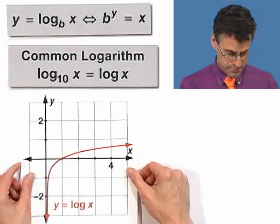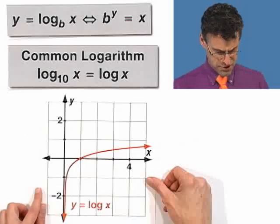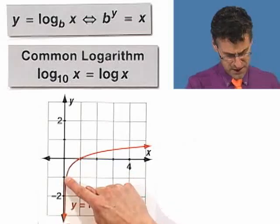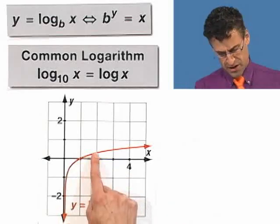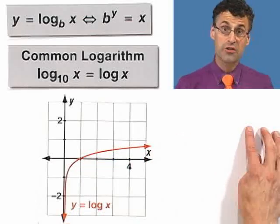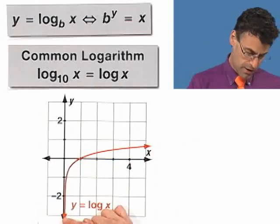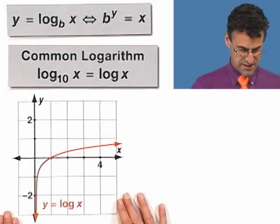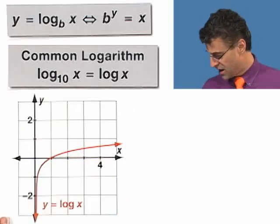And the graph of that, it's the inverse of the exponential function, which means that it has this very steep incline, then slowly gradually tapers off, and then gets bigger and bigger. This gets larger and larger without bound, but very slowly. There's a vertical asymptote on the negative y-axis here, and that's the graph of the common log.